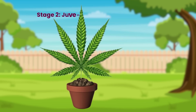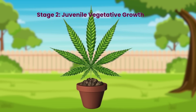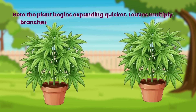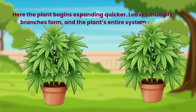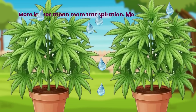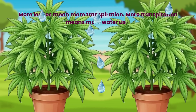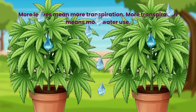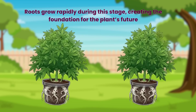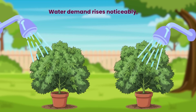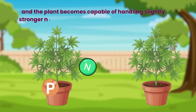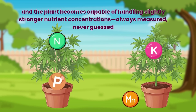Stage 2 — Juvenile Vegetative Growth. Here the plant begins expanding quicker: leaves multiply, branches form, and the plant's entire system begins accelerating. More leaves mean more transpiration; more transpiration means more water use. Roots grow rapidly during this stage, creating the foundation for the plant's future. Water demand rises noticeably, and the plant becomes capable of handling slightly stronger nutrient concentrations — always measured, never guessed.